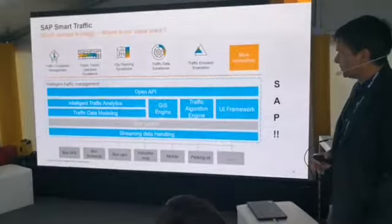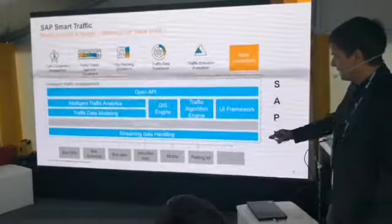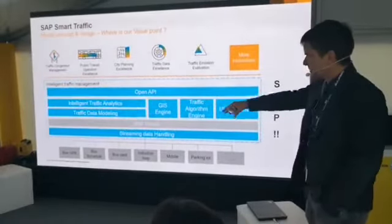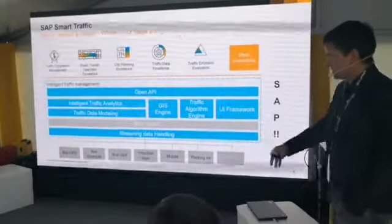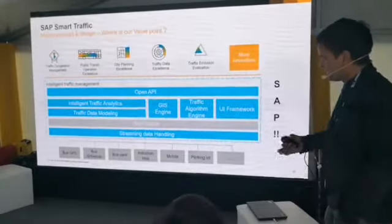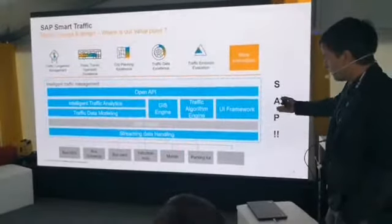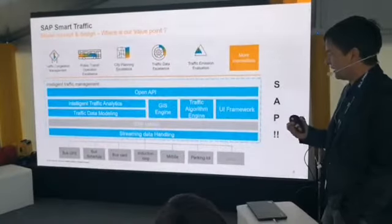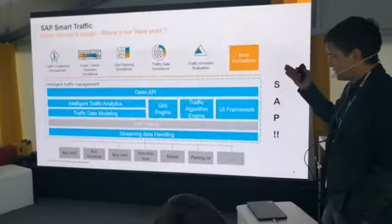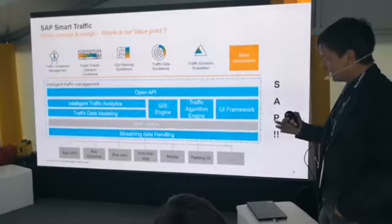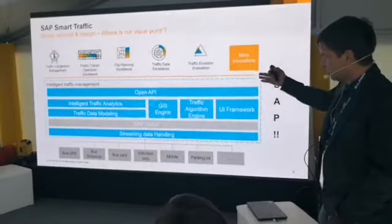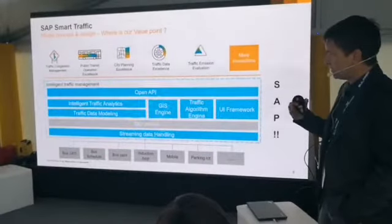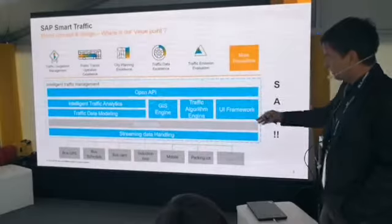Our platform is called Intelligent Traffic Management and has all these components inside. On the bottom, you have many different types of sensors: bus GPS, ticketing systems for buses, scheduling systems from bus transport agencies, induction loops, mobile parking lot data — a lot of different information that is not really structured and not in a proper format. This platform gives you the ability to clean that data and put it into a structured format, which is then used by the Intelligent Traffic Management platform. Streaming data handling is important here.